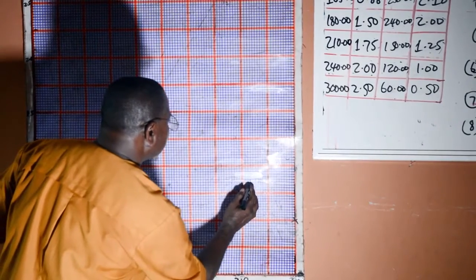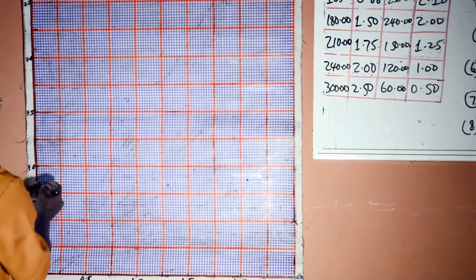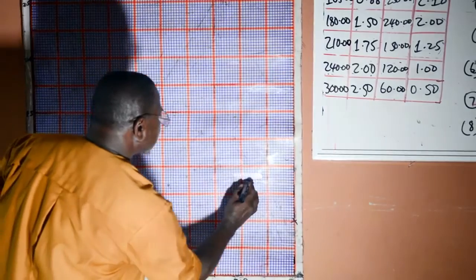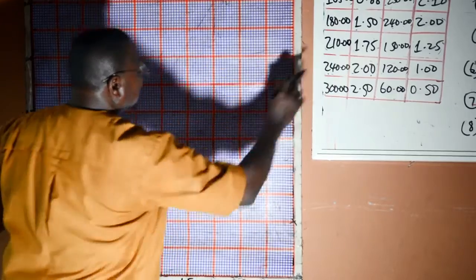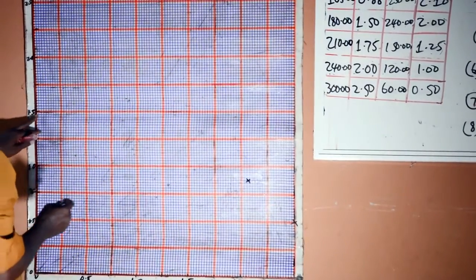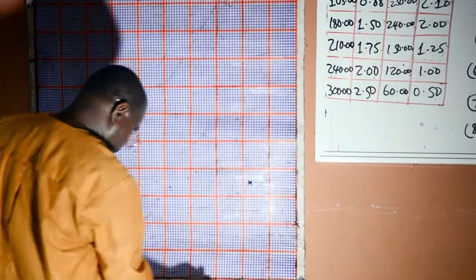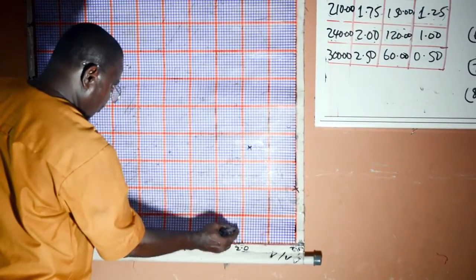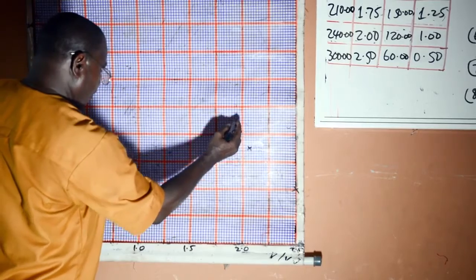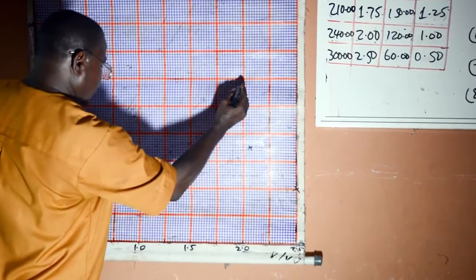You plot it. Then the next one, 1.5 on the axis against 2.0. This is 1.5, this is 2.0.